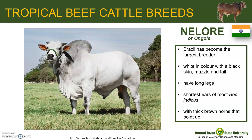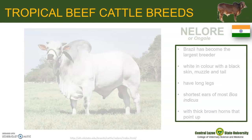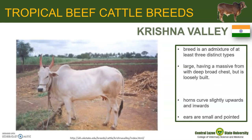They are also horned and when present, these are described as thick and brown, pointing up. Next is Krishna Valley. Krishna Valley originated from India and was believed to have evolved from breeding three breeds including Gir, Nellore, and Mysore.